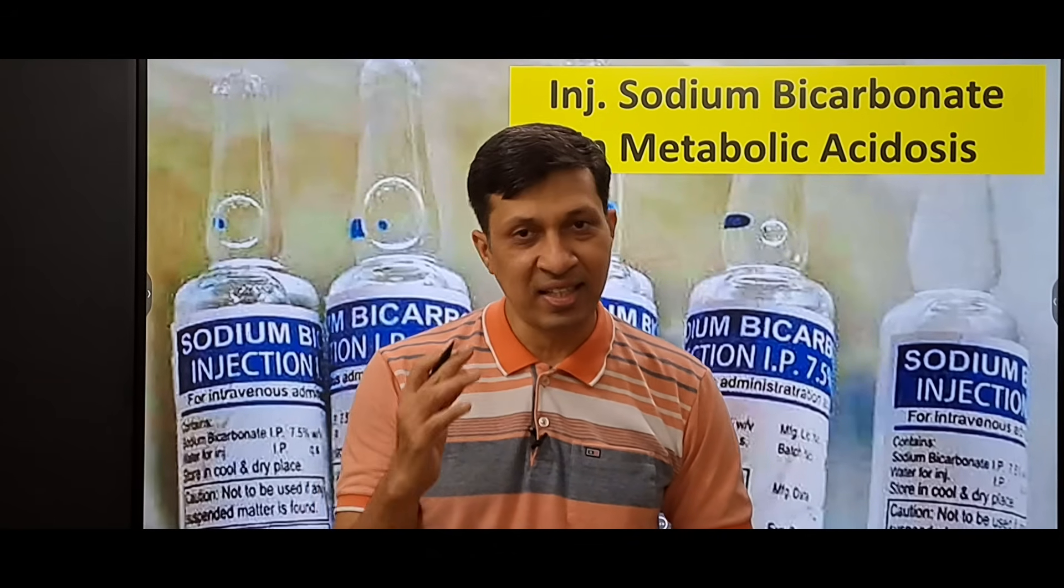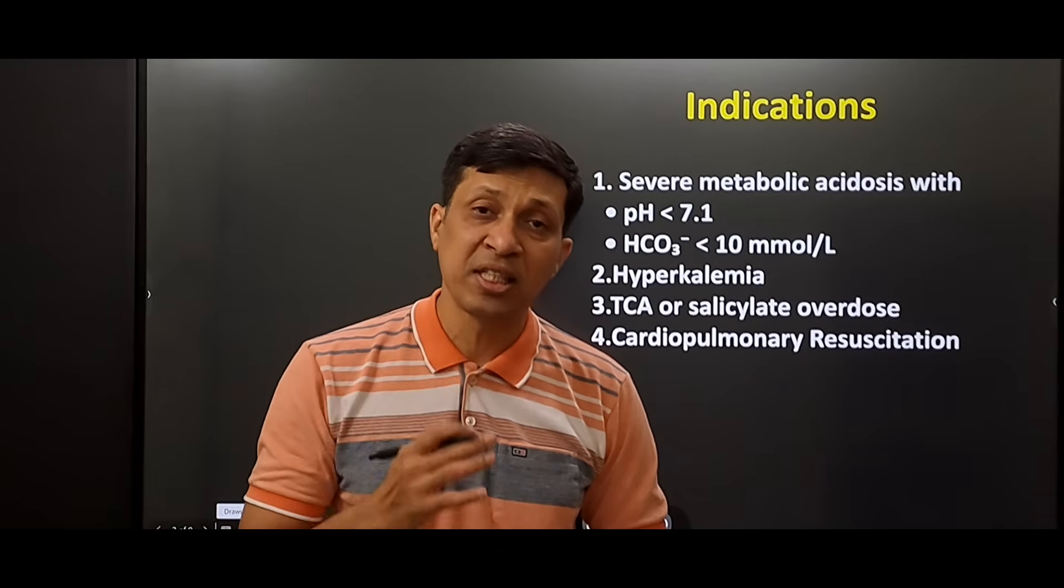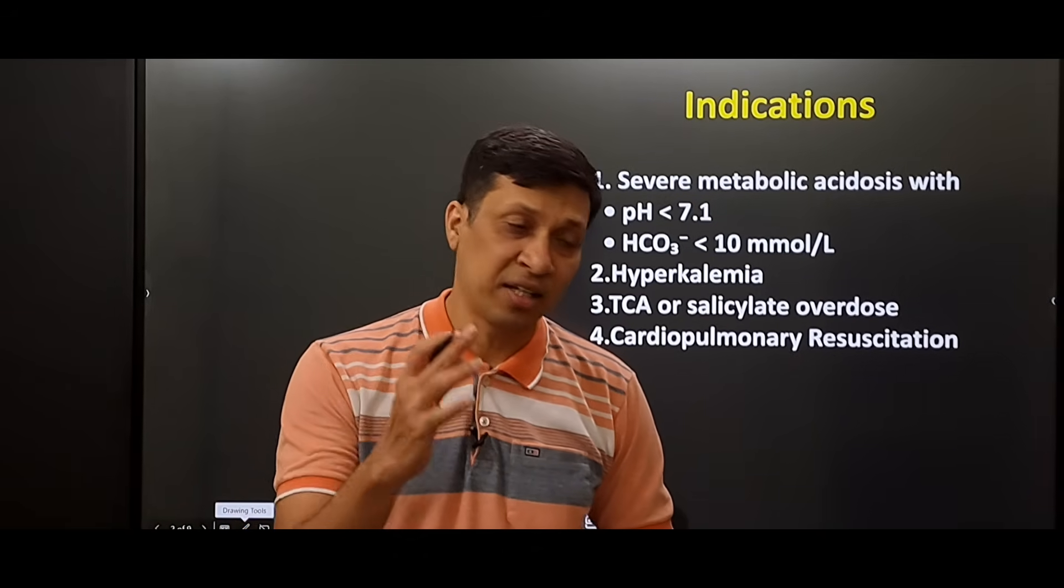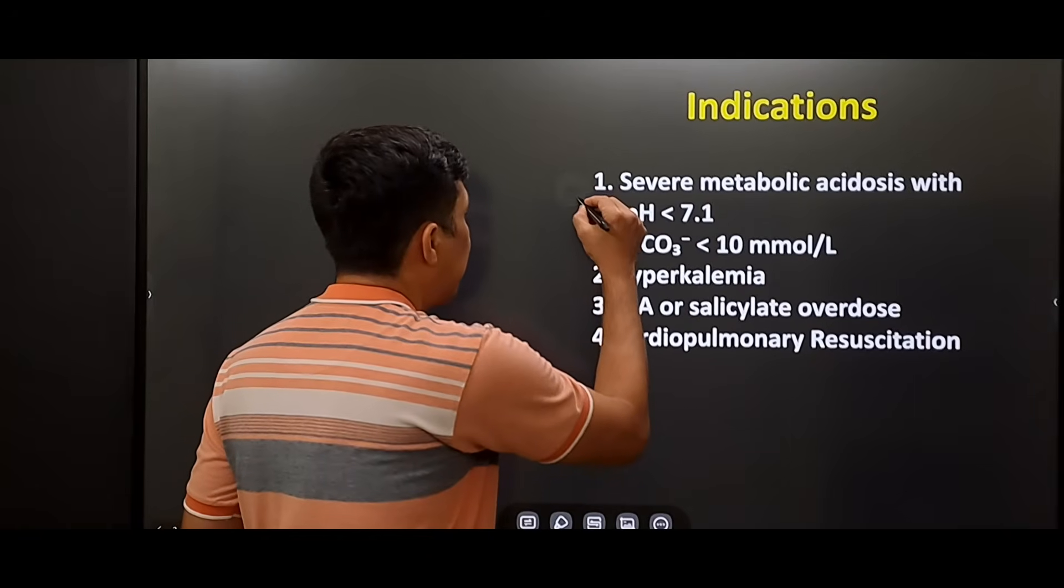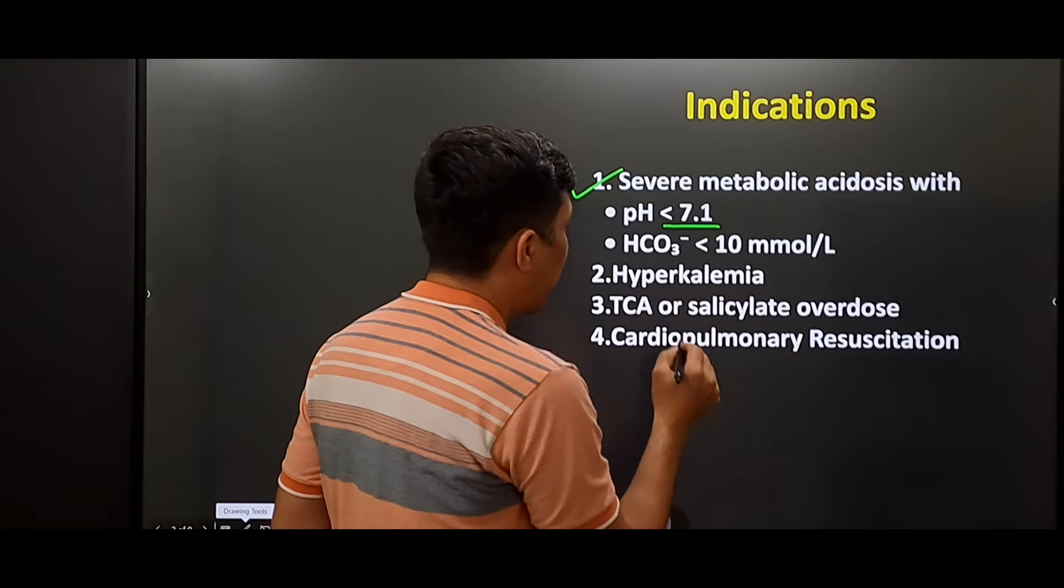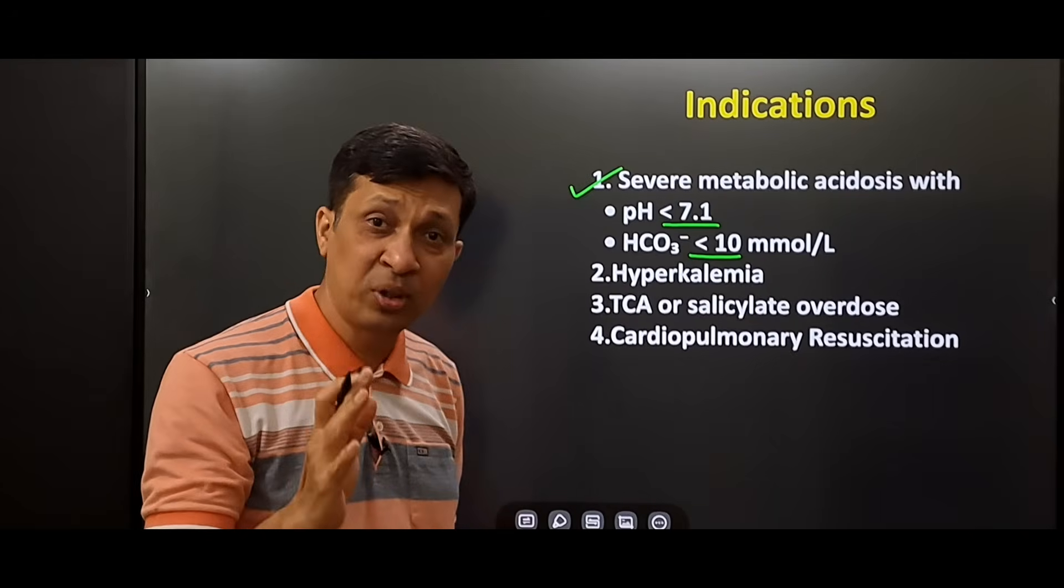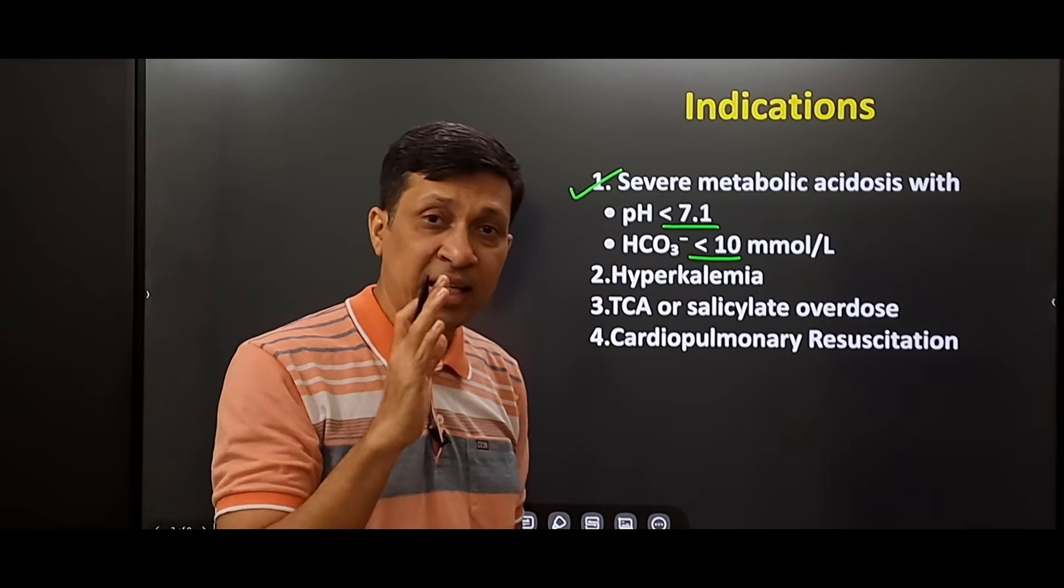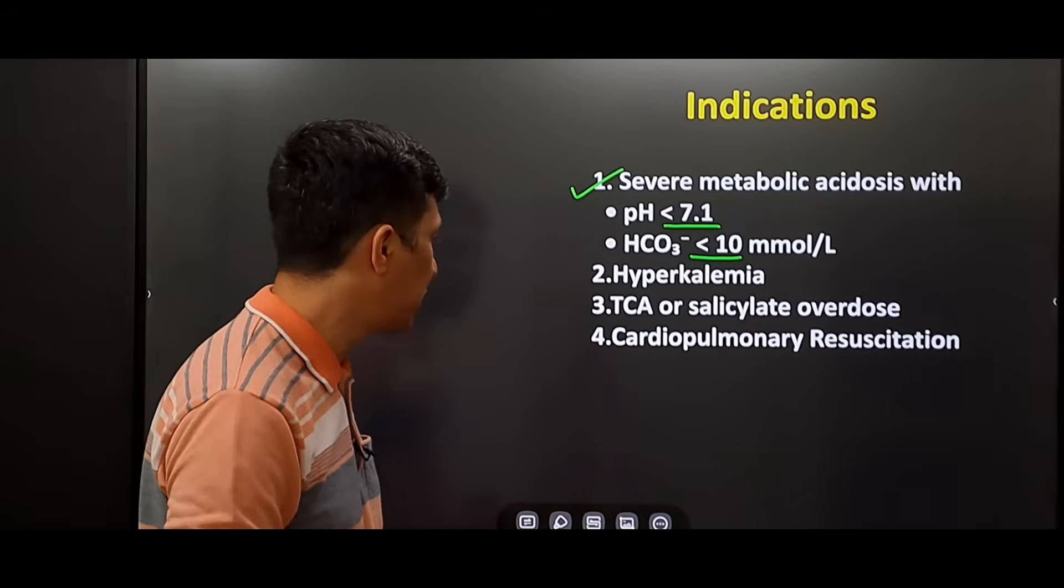Let's get started. First, we are going to see what are the indications of using this drug in ICU. The first and foremost indication is severe metabolic acidosis when the pH is less than 7.1 or the bicarbonate level is less than 10. In simple type of metabolic acidosis, we are not supposed to use this drug.